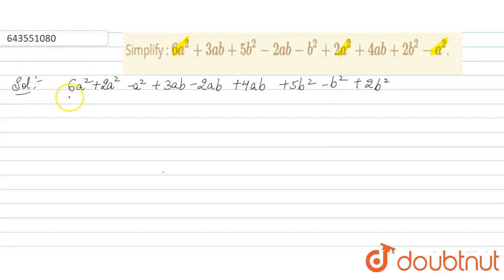Now let us solve this. So if we add 6 + 2, it is 8a² - a². 3 - 2, it is +1ab + 4ab and if we subtract these two, so it is +4b² + 2b².